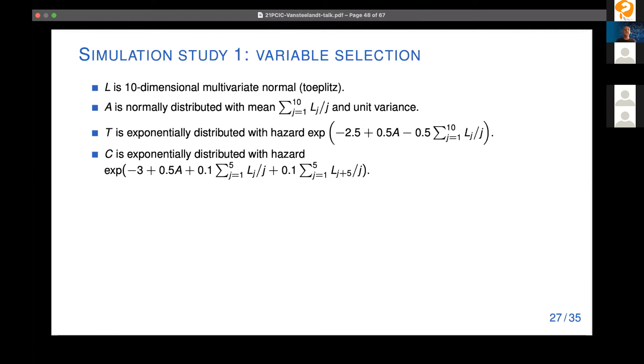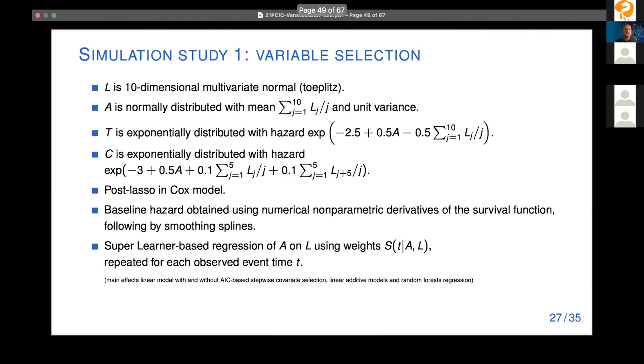I'll look at two settings. The first one considers variable selection. So I'm going to assume the Cox model holds here, but the focus is going to be on how can we accommodate the uncertainty coming from variable selection. I'll work with a 10 dimensional covariates. We have a continuous exposure and then exponentially distributed event times and censoring times. I'll look at a few strategies. So a naive strategy would be post lasso in the Cox model. So we use lasso only as a variable selection procedure, and then we refit the model with partial likelihood. For the proposed approach, we also work under the Cox model, and to estimate the baseline hazard, we basically took numerical nonparametric derivatives of the survival function. And then we used smoothing splines to smooth the obtained baseline hazard for the exposure models. We use super learner with stepwise selection strategies, linear additive models, and random forest regression.